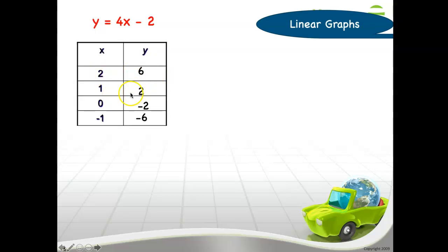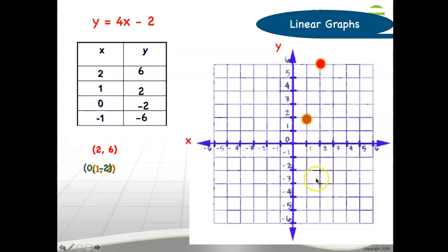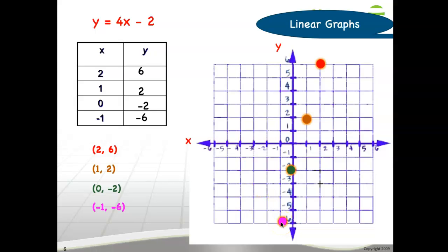Now we have four points because each pair represents one point and we can plot that. The first point is 2 and 6: go to 2 at X and 6 at Y. Second point is 1 and 2: one in X and 2 in Y. Third point is 0 and negative 2. The last point is negative 1 and negative 6. We have all four points, then let's connect the four points by a straight line — and that's your graph.